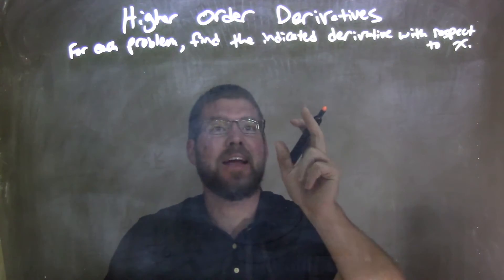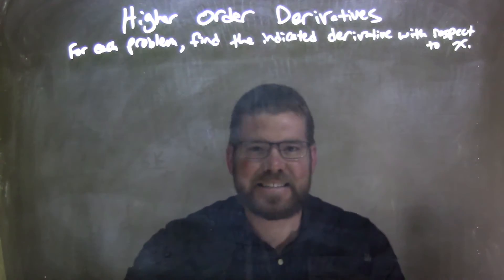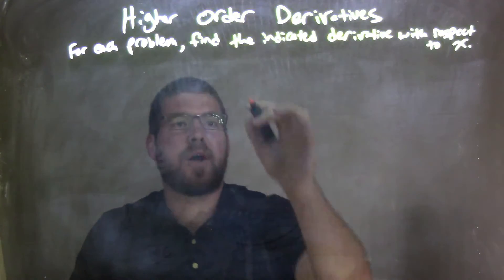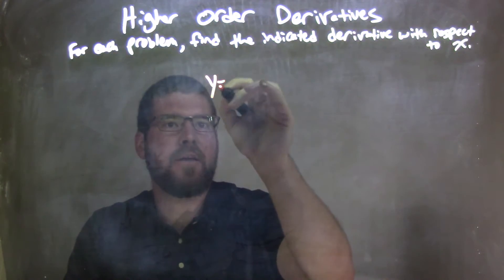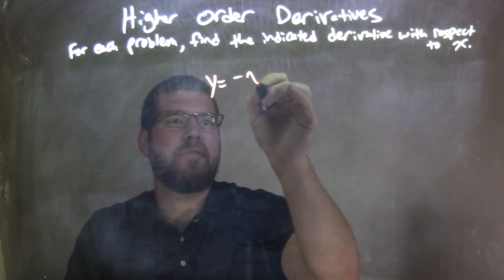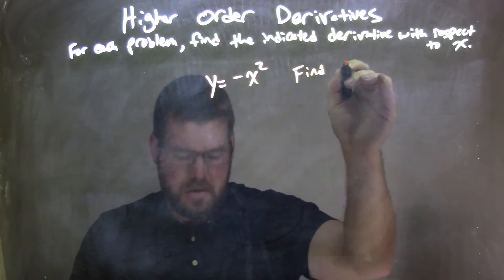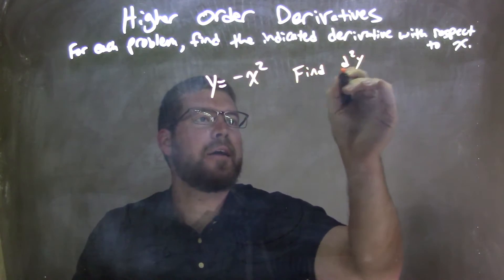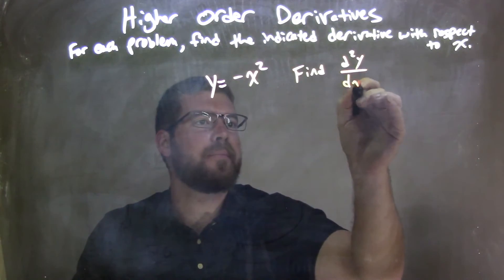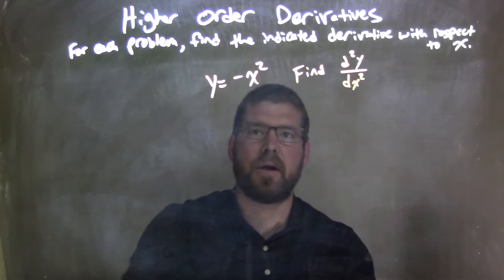For each problem, we're going to find an indicated derivative with respect to x. So if I was given this problem, y equals negative x squared, and we want to find d²y/dx², the second derivative.